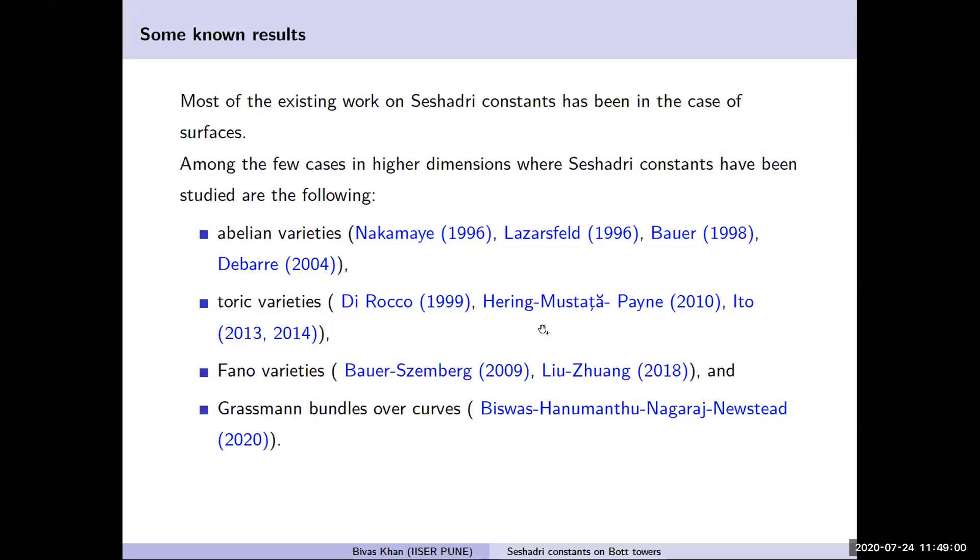Dirocco and Haering-Mostarda-Payne have computed Seshadri constants for torus fixed points. For a toric variety there are finitely many torus fixed points. Later, Ito has given bounds for Seshadri constants on any toric variety at all points. However, it's not always possible to compute Seshadri constants explicitly.